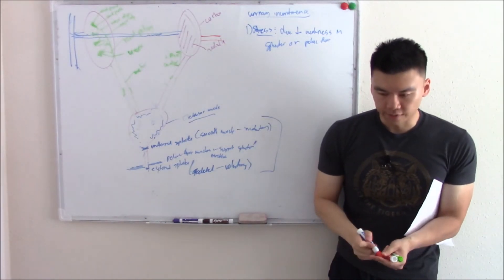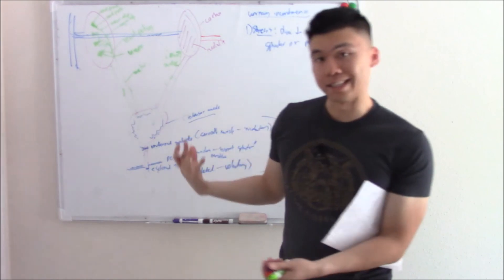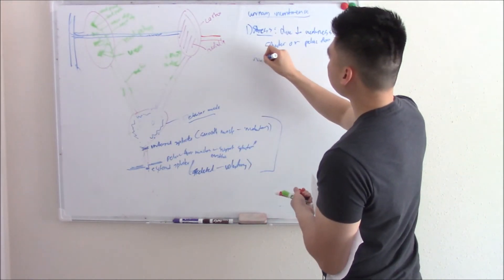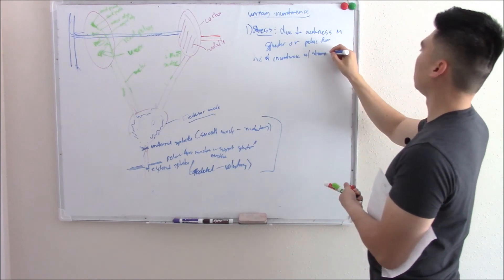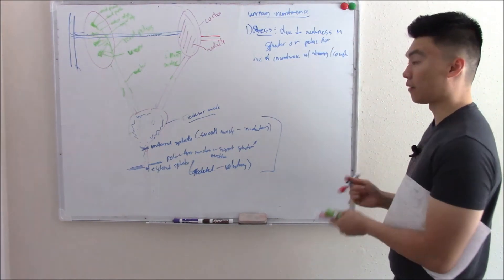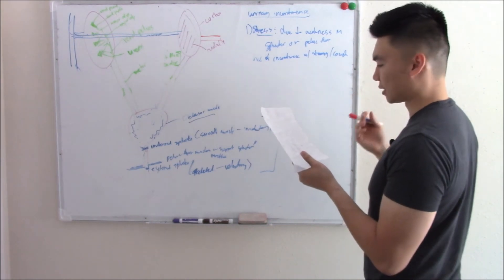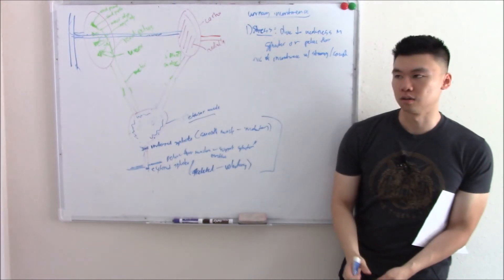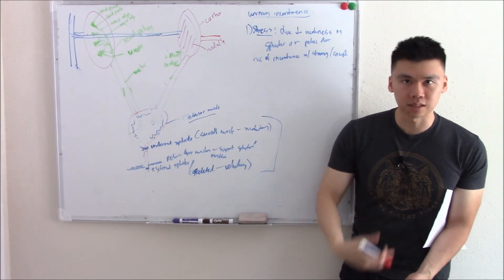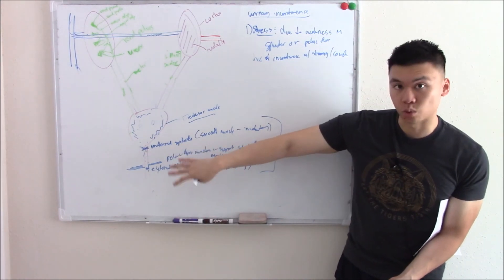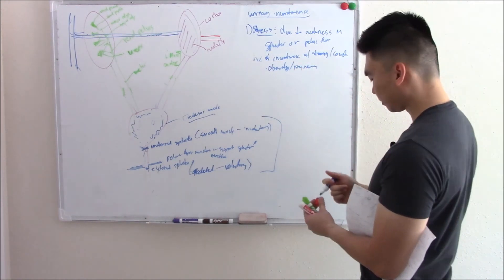In stress incontinence, urine leaks with coughing, straining, sneezing, or weight lifting. You can diagnose it by asking the patient to cough in the office — if urine comes out, it's stress incontinence. Causes of the muscle weakness include obesity, which puts weight on these muscles, and pregnancy or delivery, which is traumatic and can damage the pelvic floor.